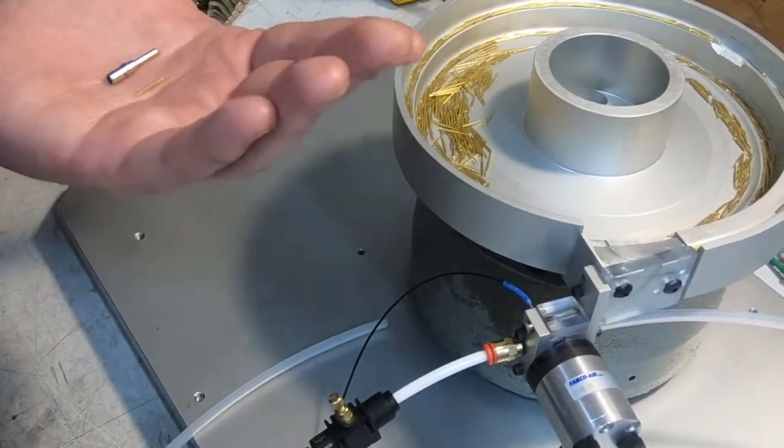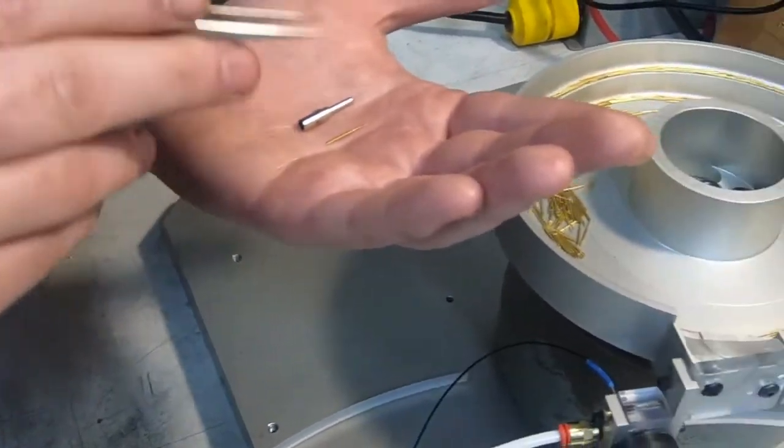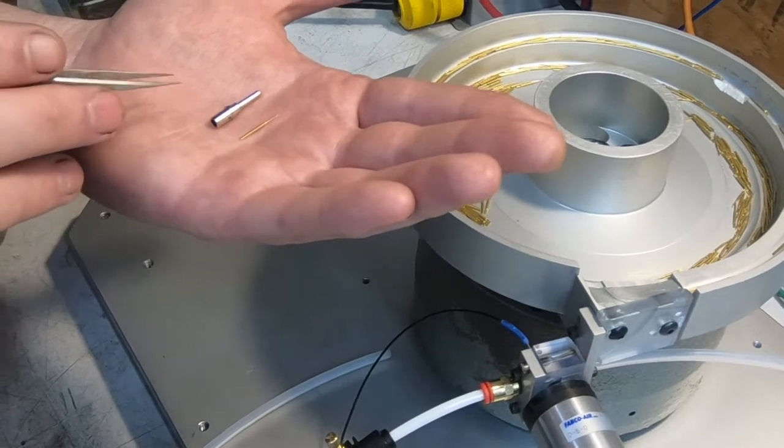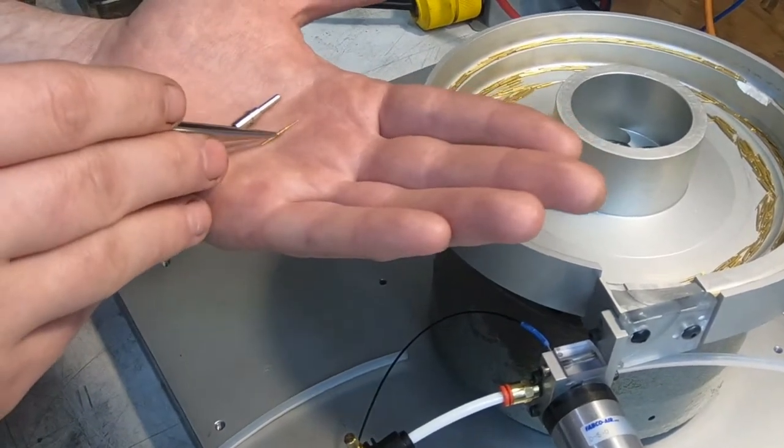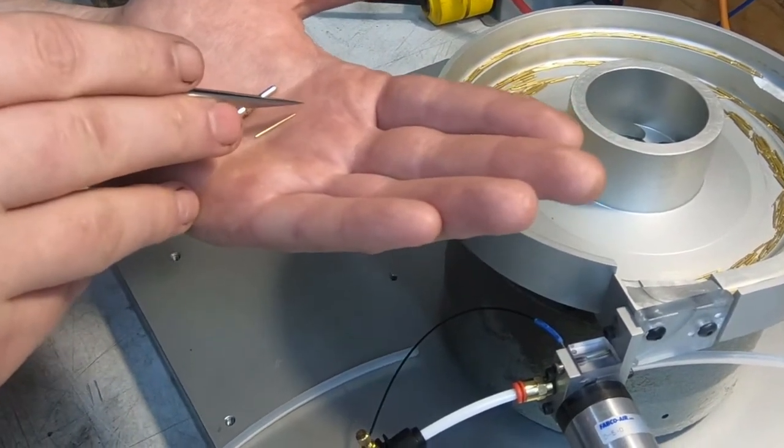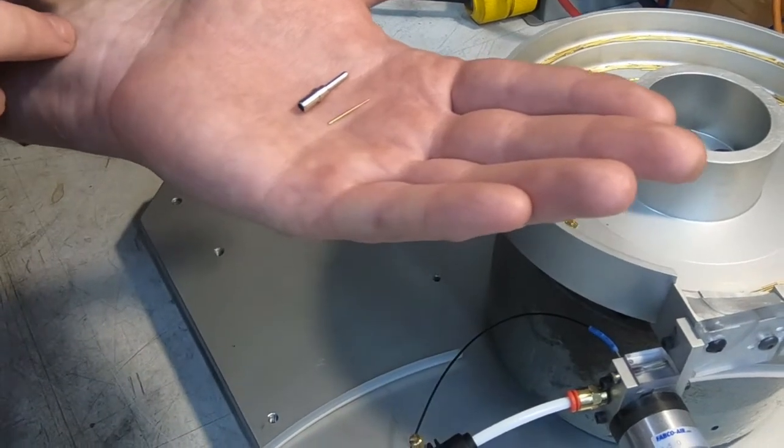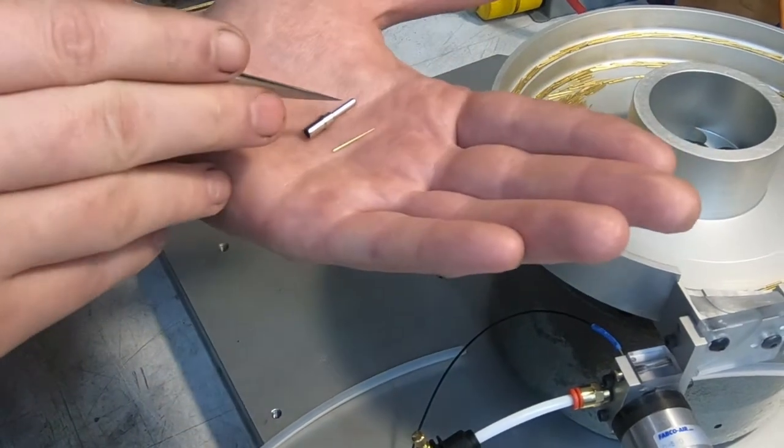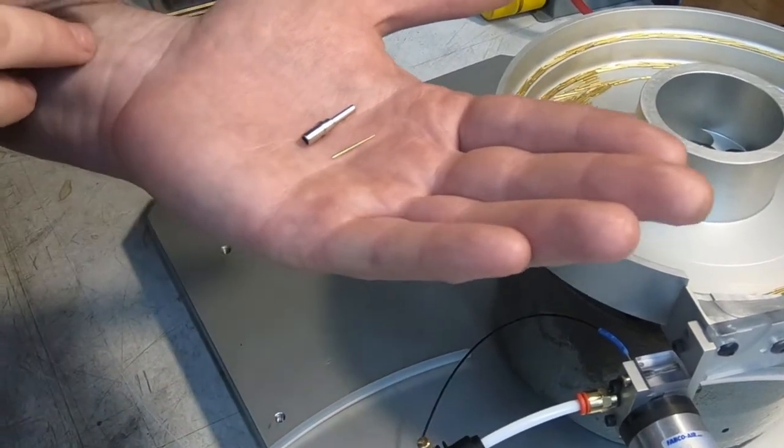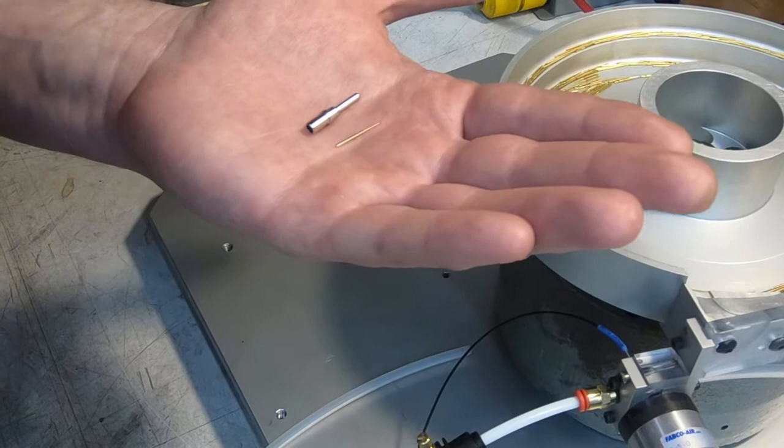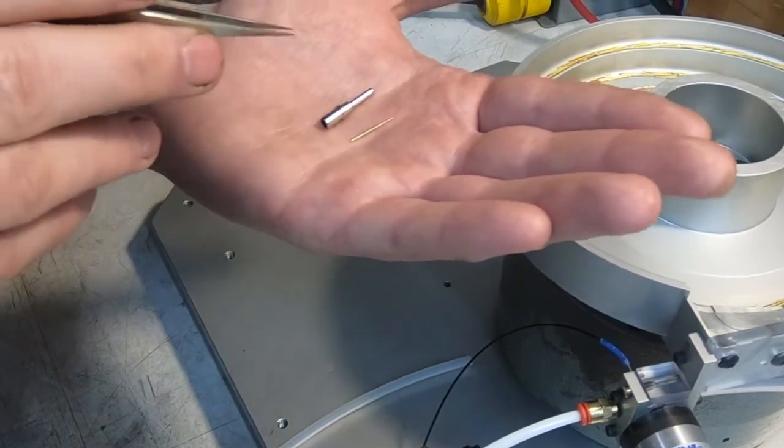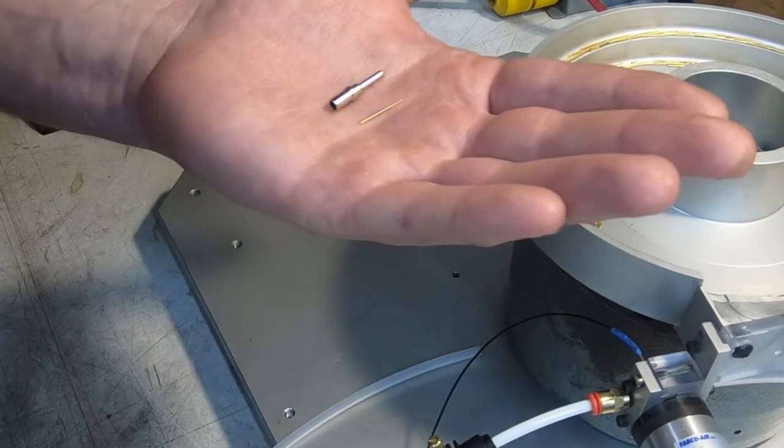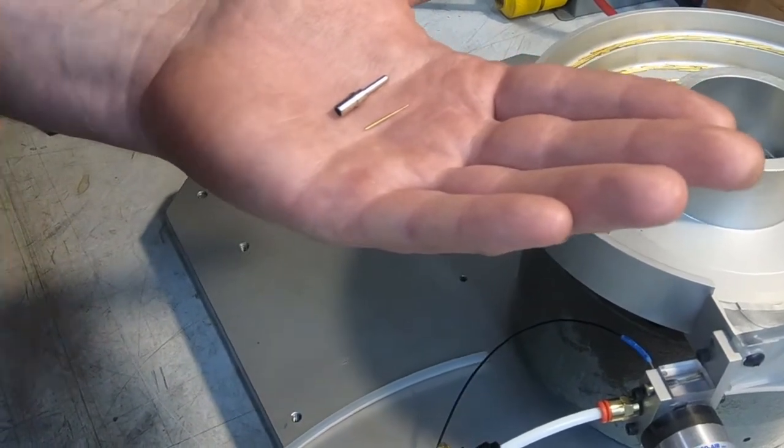However, in this case, our customer contacted us because they already had an existing system developed by a low-bid overseas manufacturer to take the pins, orient them pin forward, and then present them to a pick-and-place robot, which would do the actual insertion. Unfortunately, the orientation and feed mechanism for this had proven to be highly unreliable, making not only their entire investment in the machine at risk, but causing them significant production problems and delays at the same time.